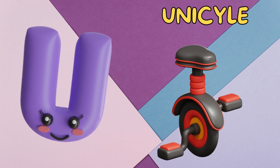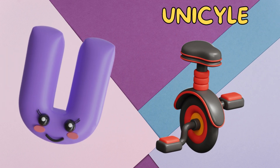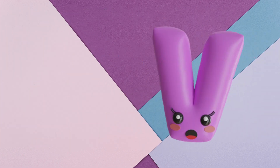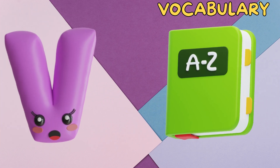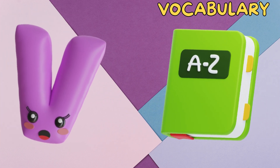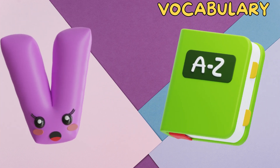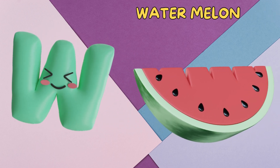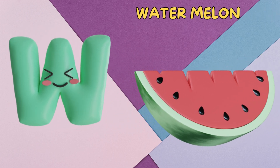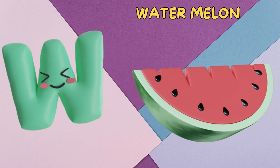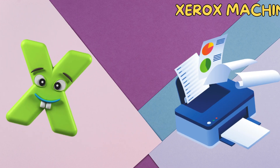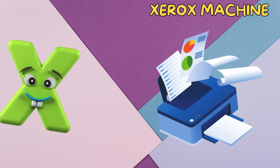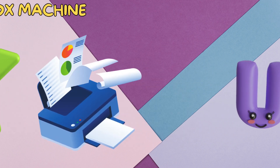U is for unicycle. U, u. Unicycle. V is for vocabulary. V, v. Vocabulary. W is for watermelon. W, w. Watermelon. X is for xerox machine. X, x. Xerox machine.